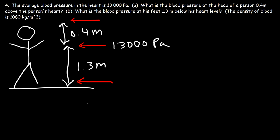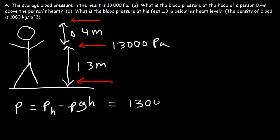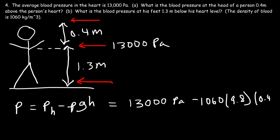So let's calculate the pressure at his head. The pressure at his head is going to be the pressure at his heart minus ρgh — that's the change in pressure due to the change in height. At his heart the pressure is 13,000 Pa, the density of blood is 1,060, g is 9.8, and the person's head is 0.4 meters above the heart level, so h is positive 0.4. So 13,000 minus 1,060 times 9.8 times 0.4 gives us approximately 8,845 Pa.